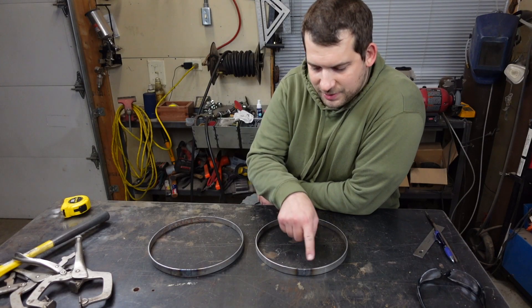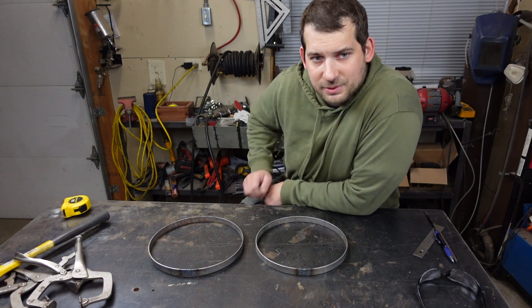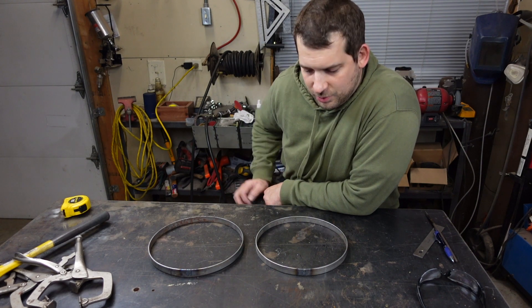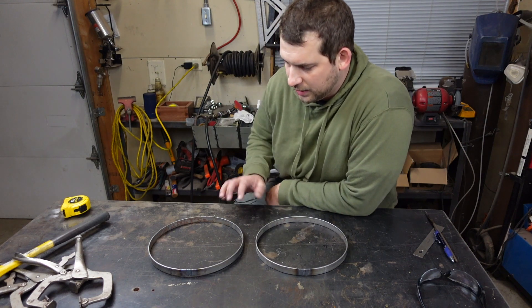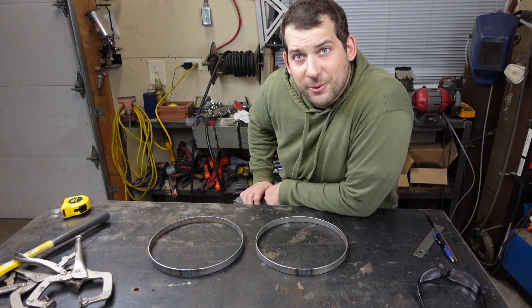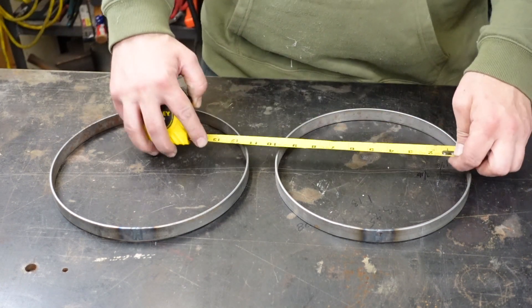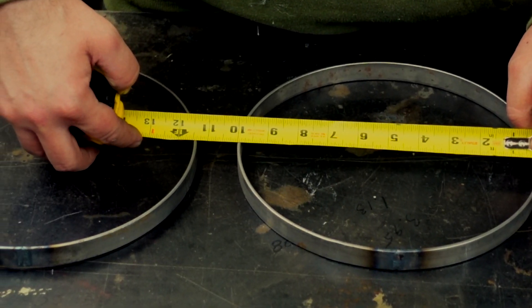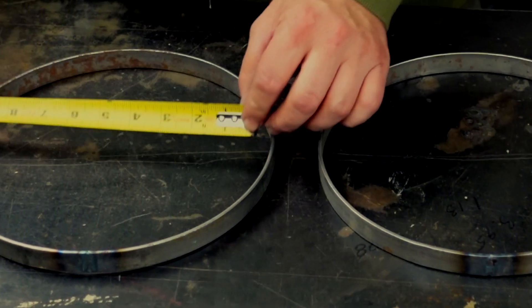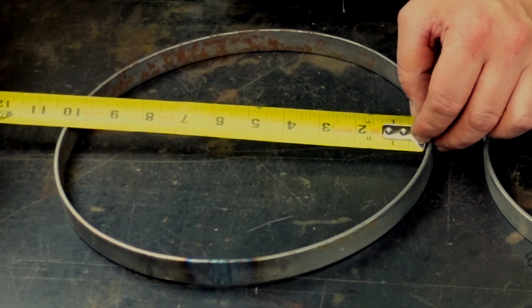So I went ahead and rounded them out just a little bit more on the anvil. I just didn't quite round them out enough on the roll there at the beginning, but got our two rings here, and let's see how we did. So as you can see we have exactly 10 OD on that one, and exactly 10 ID on that one.